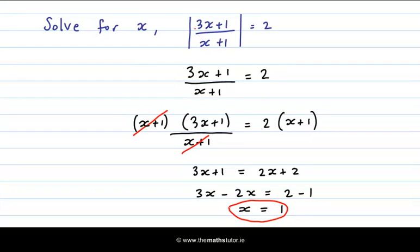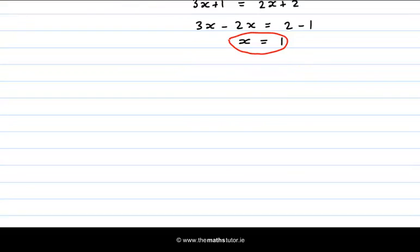Now we take the bit inside the modulus signs, 3x plus 1 over x plus 1, and we make it equal to minus 2. So we have 3x plus 1 over x plus 1, and we make it equal to minus 2, and we'll solve for x.